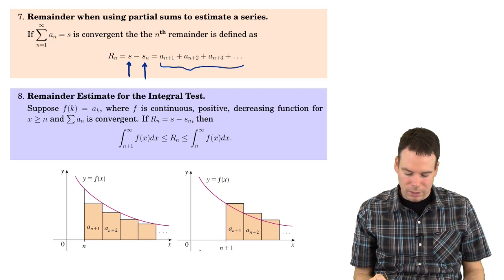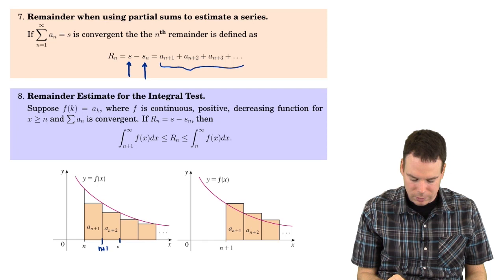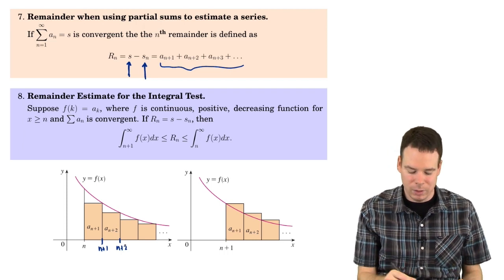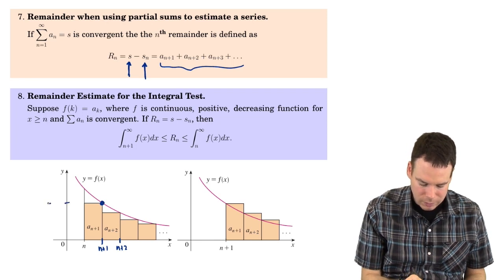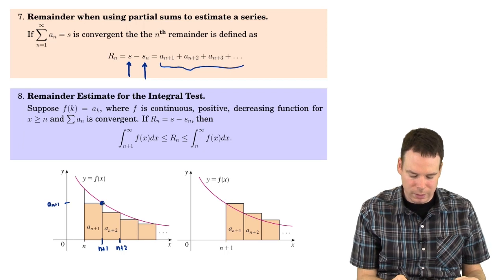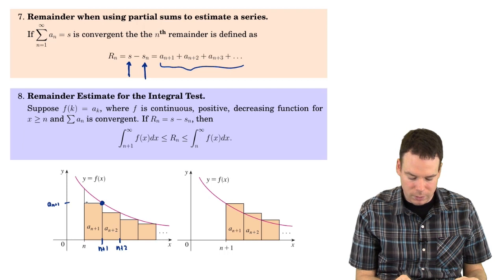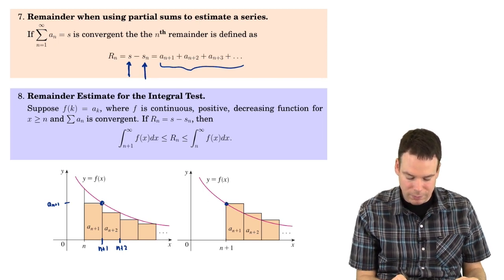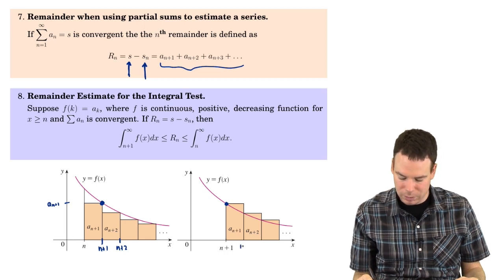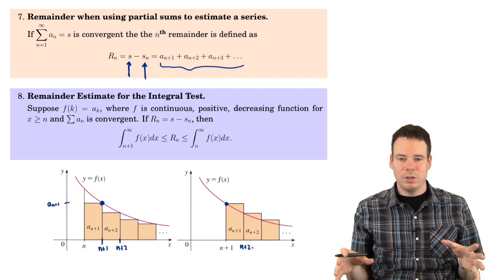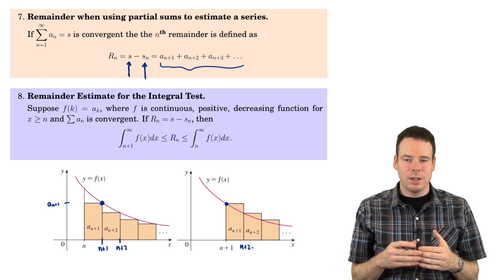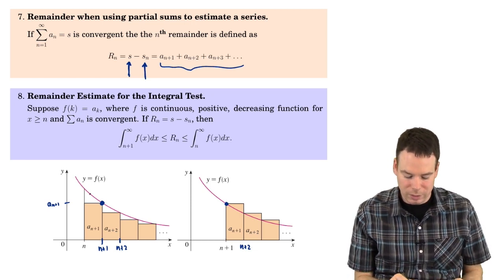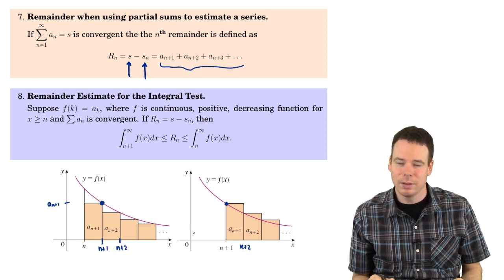I've got two diagrams drawn here. The only difference between them is whether, on an interval like n to n+1 or n+1 to n+2, I take the left-hand endpoint or the right-hand endpoint to cap off the rectangle. The point at height a_{n+1} can serve as the right-hand endpoint for the interval n to n+1, or as the left-hand endpoint for the next interval. We're exploiting the fact that the function is positive, decreasing, and continuous — the hypothesis in the integral test.